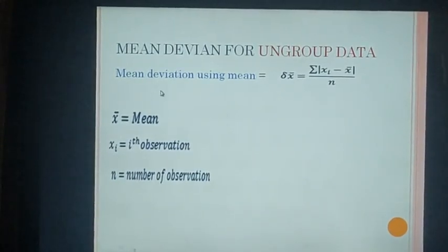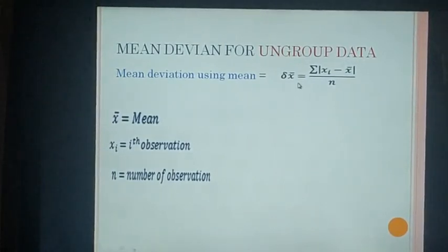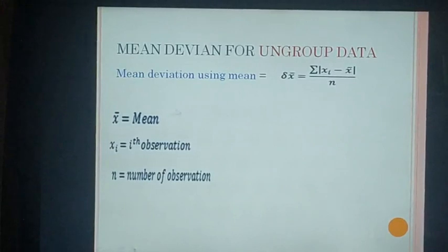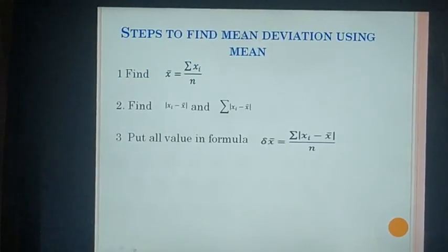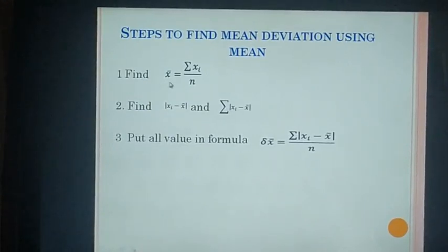Here we are going to see mean deviation using mean. The formula is: δx̄ = Σ|xi − x̄| / n, where x̄ is the mean, xi is the ith observation, and n is the number of observations. The first step to find mean deviation using mean is to find x̄.